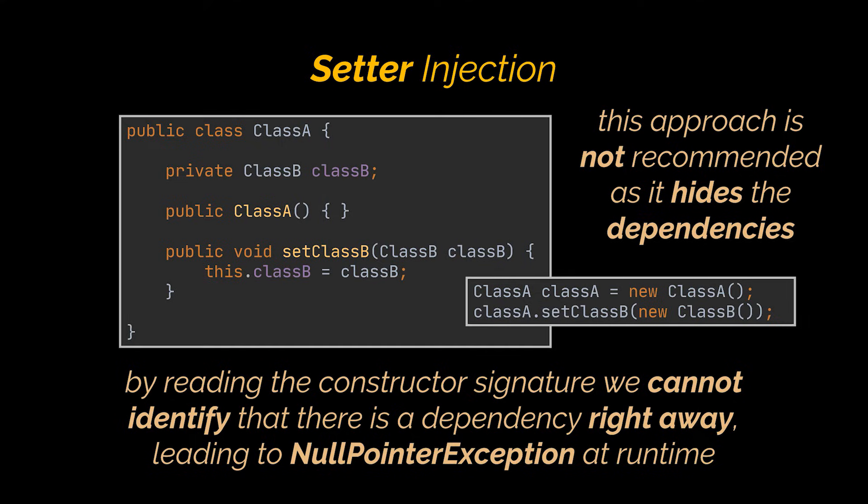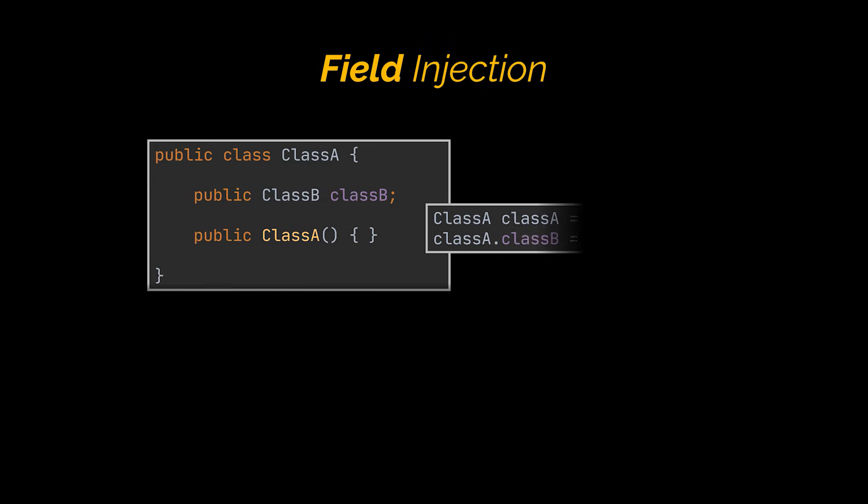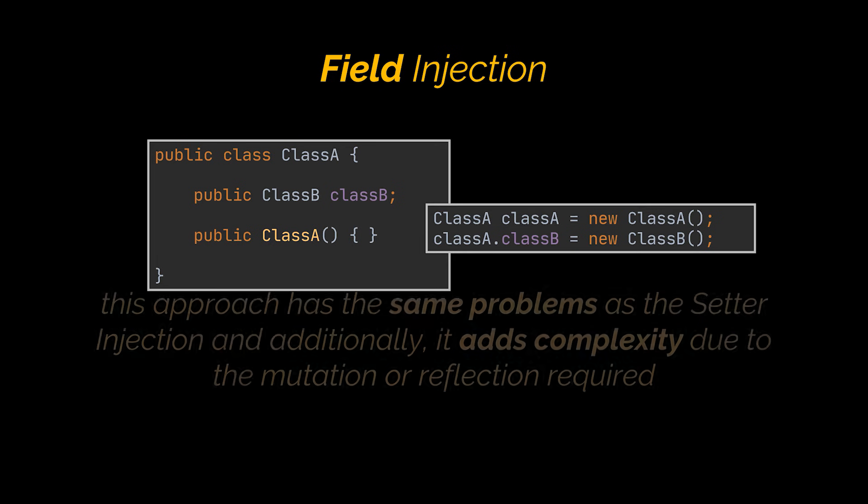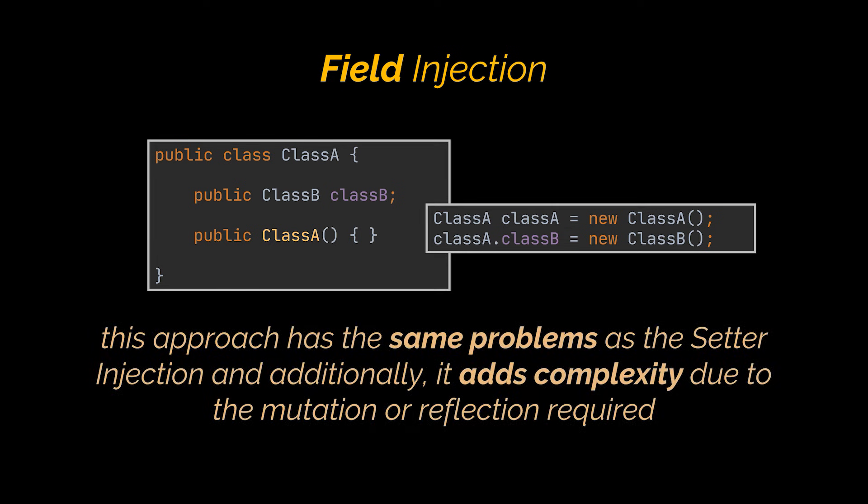And finally there is a third way to inject dependencies in Java and it is called field injection. The only way for field injection to work is either directly mutate the field because it's a non-private and non-final field, or modify a final or private field using reflection. This approach has the same problem we discussed in the setter injection approach, and additionally it adds complexity due to the mutation or reflection required.